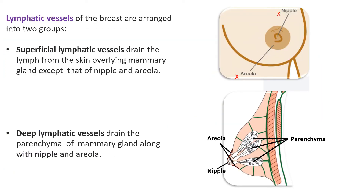Let us now see how the lymphatic vessels are arranged in the mammary gland. They are arranged in two groups: superficial and deep. The superficial lymphatic vessels drain the lymph from the skin overlying the mammary gland, except for the nipple and the areola. The deep lymphatic vessels drain the parenchyma of the mammary gland — the glandular tissue and the ducts — and in addition they also drain the lymphatics from the areola and the nipple.